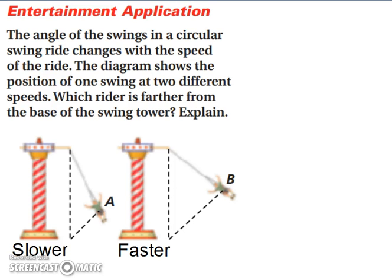Let's look at an entertainment application. The angle of the swings in a circular swing ride changes with the speed of the ride. The diagram shows the position of the swing at two different speeds — which rider is farther from the base of the swing tower? The slower one is to the left and the faster one is to the right. As the speed increases, the rider goes farther away. The angle formed by the swing in position A is smaller than the angle formed by the swing in position B.